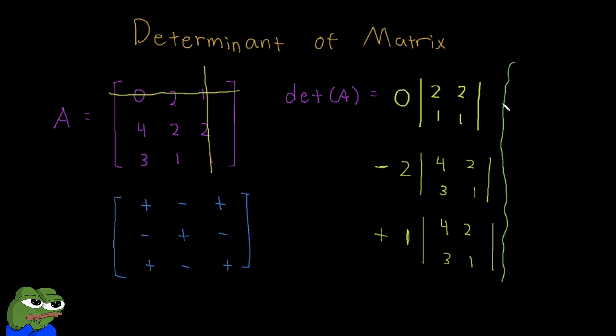So this first term would be 0 times 2 times 1 is 2 minus 2 times 1 again is 2. So that's really 0. Minus 2 times 4 times 1 is 4, minus 2 times 3 minus 6. And our last term would be 1, so that's plus 1 times 4 times 1, so that's 4, minus 2 times 3 minus 6.